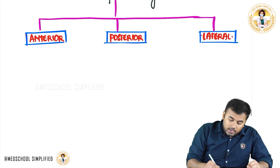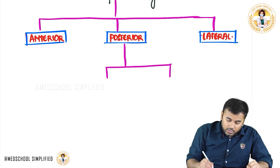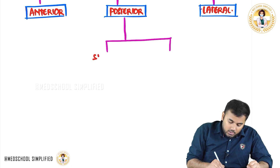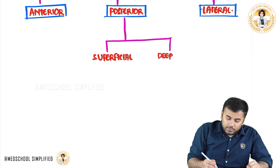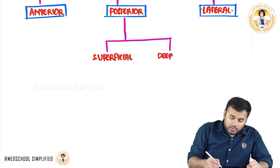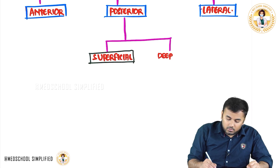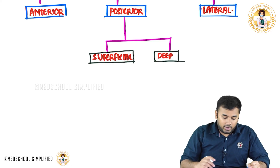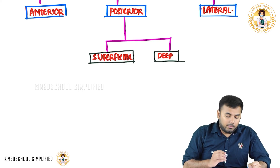The posterior compartment in turn has two other compartments: a superficial compartment and a deep compartment. Now let us look at what muscles are located in the anterior compartment.